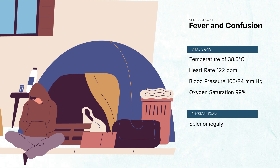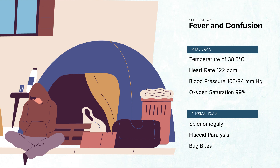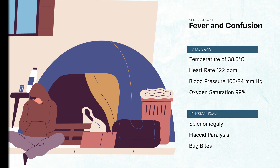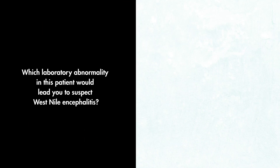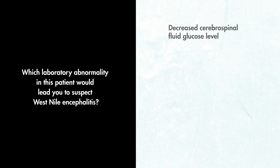You notice splenomegaly when examining his abdomen. You also notice flaccid paralysis and what appears to be multiple bug bites on his skin. Which laboratory abnormality in this patient would lead you to suspect West Nile encephalitis?